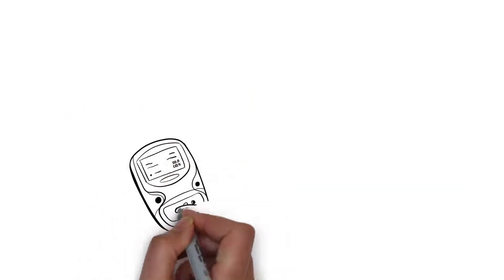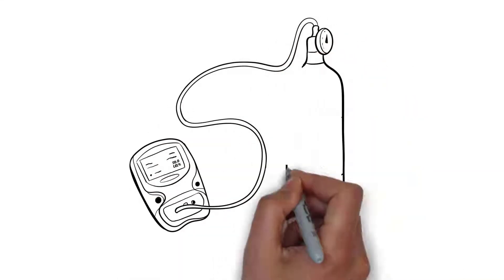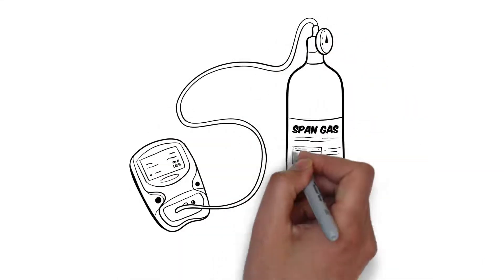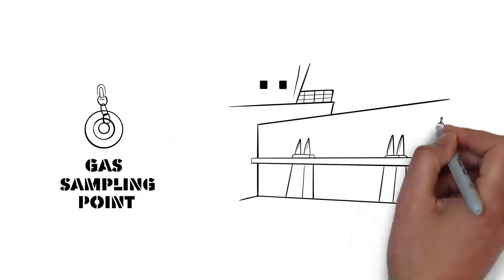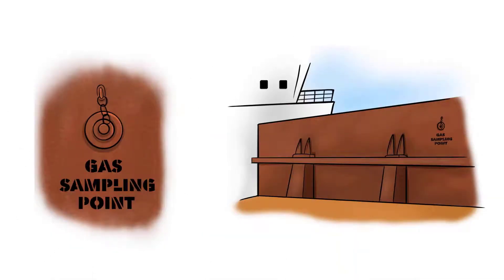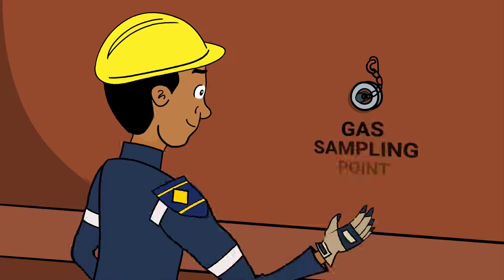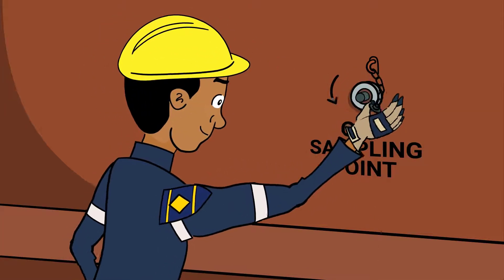To enable accurate readings, the multi-gas detection meter must be correctly serviced, calibrated and regularly bump tested. Gas readings must be taken via the fitted sampling points. Follow these steps to get an accurate gas reading.